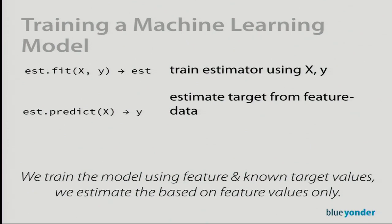The interface is as follows: we have a class representing a machine learning algorithm. It has a method `fit` that receives features named X and a target array Y, which trains the model to learn correlations between features and targets. Then we have a method `predict` that can be called on the trained estimator to give us an estimate Y for given features X. I'm not going to talk about the algorithms themselves.